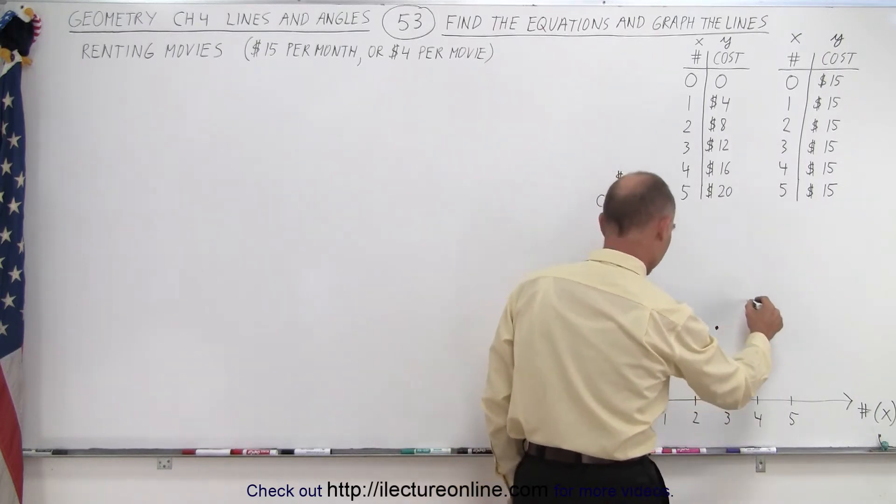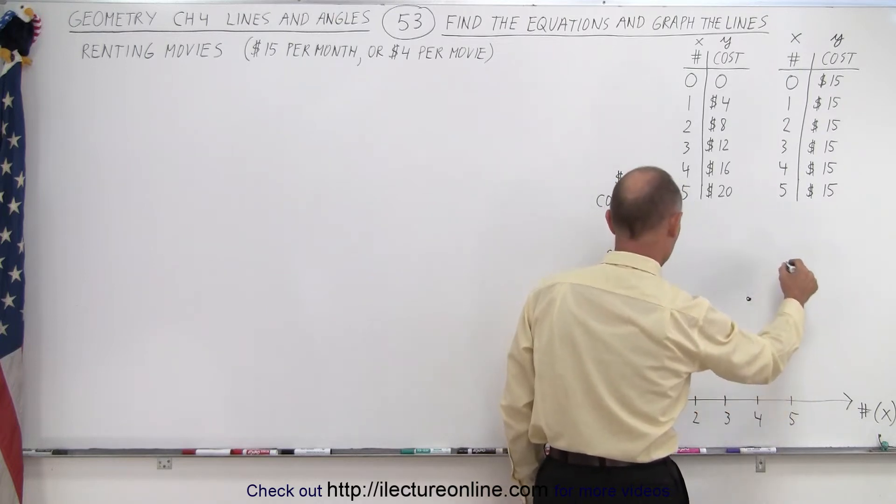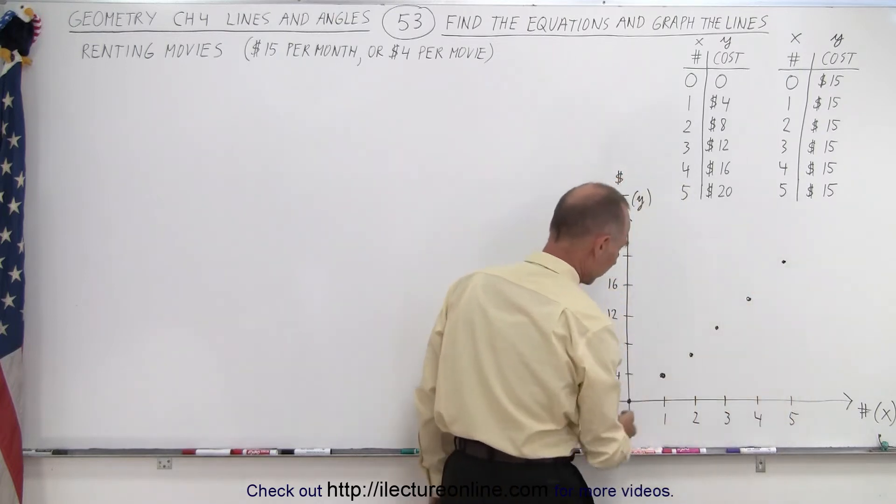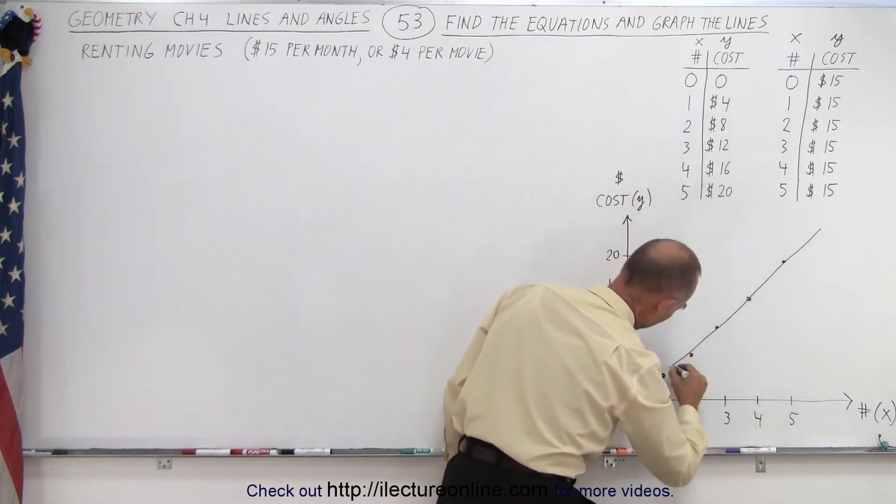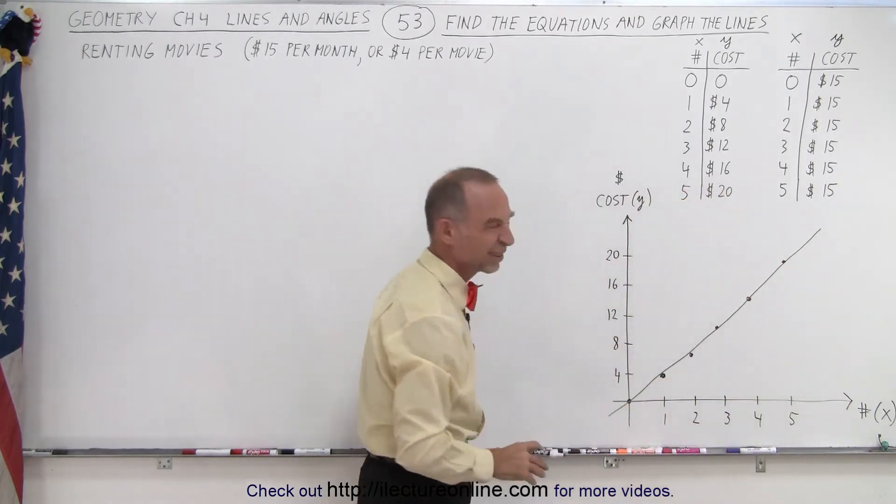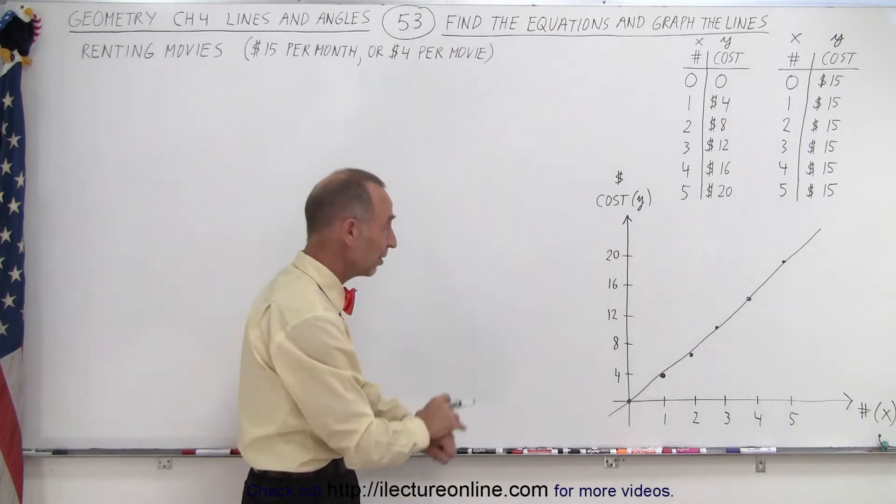Four movies, sixteen dollars, and five movies, you pay twenty dollars. So now you can see that we can connect those points and that gives us a single line. Not quite as straight as we want, but good enough for our purpose.